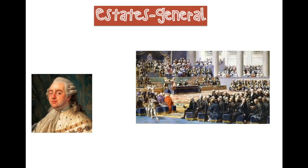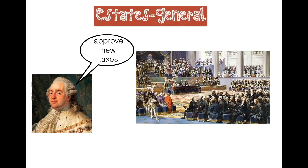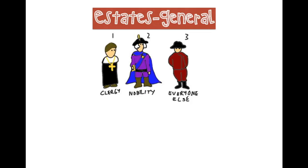Louis is broke. Louis needs money. Louis needs to tax somebody. He wants to put taxes on the nobles, but the nobles say they're not going to pay those taxes unless it's approved by a group called the Estates General. The Estates General is where each of the three estates meets and votes on taxes. This hadn't happened in about 175 years, so this is a pretty big deal. Each estate has a voice and a vote in the Estates General.